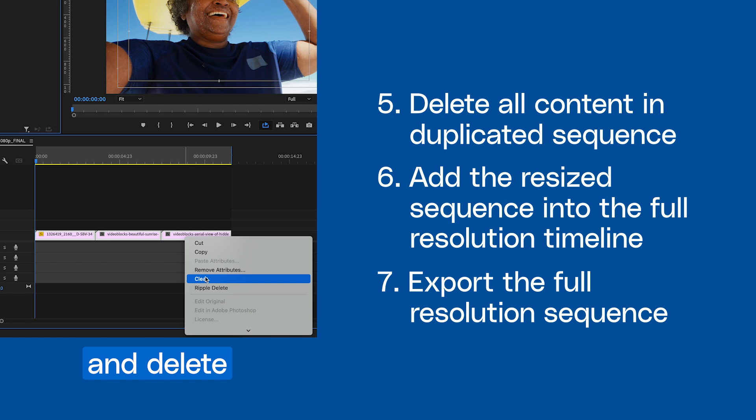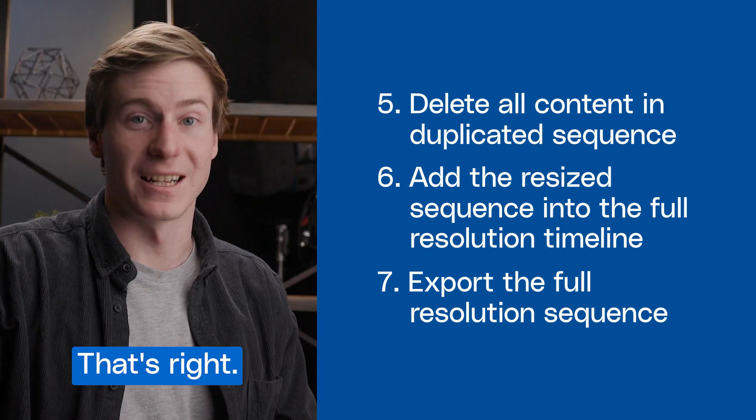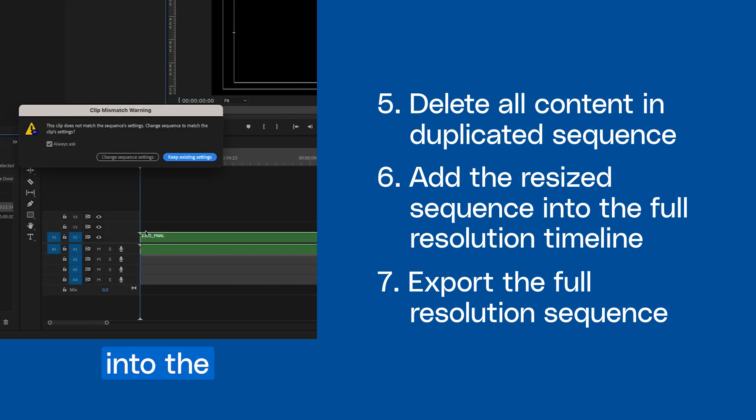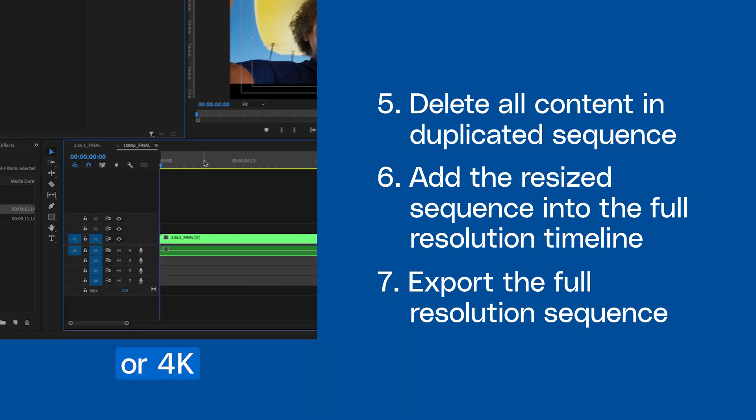come back to your duplicated sequence and delete all of the content. That's right, everything. Drag and drop the 2.35:1 sequence into the full resolution HD or 4K timeline.